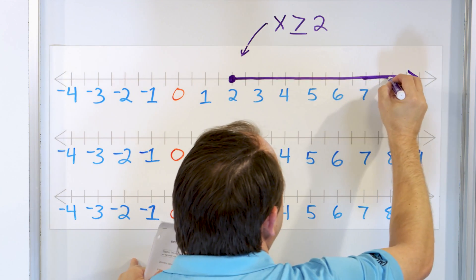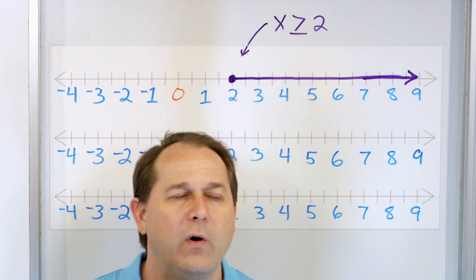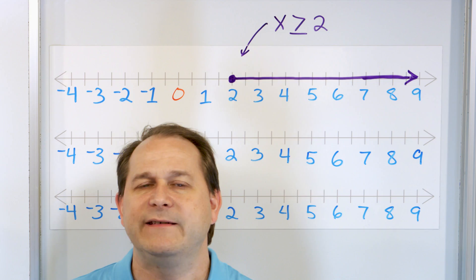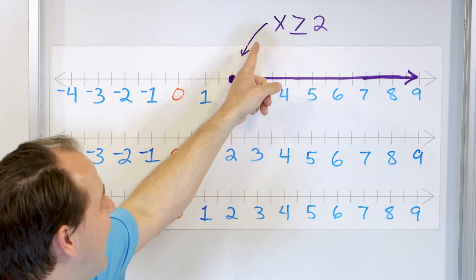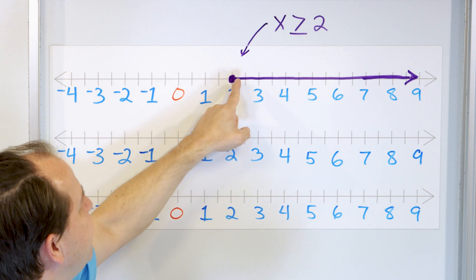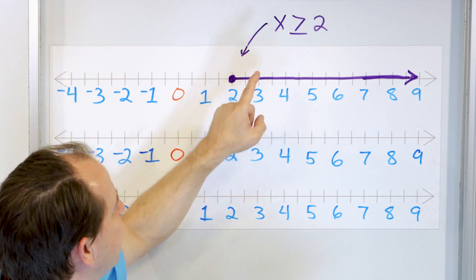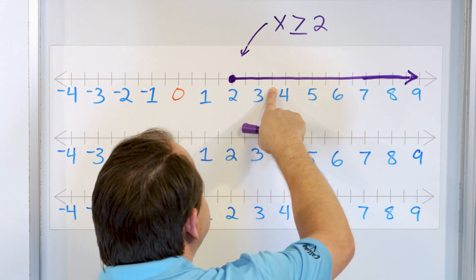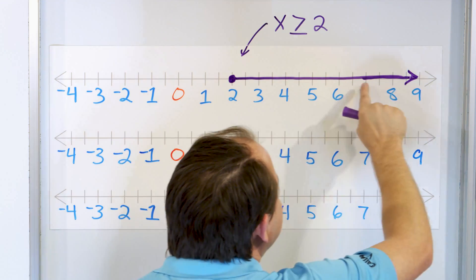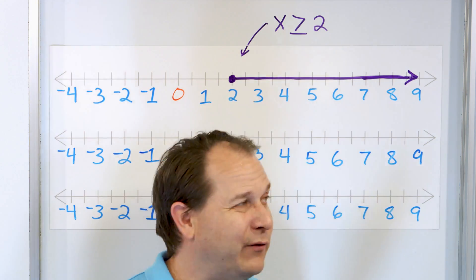What this graph is telling you is we're shading the number line. Anywhere in the shaded region is what this inequality represents. Before, if x equals four or three, you just put a dot on the number line. But if x is greater than or equal to two, you put a solid dot at two because of the equal sign, and the shading tells you any number bigger than two is also valid — including decimals like 3.5 or 4.67923, anywhere between those whole numbers larger than or equal to two.